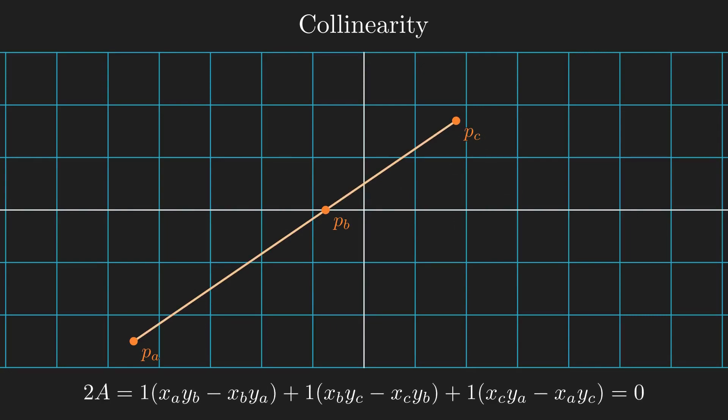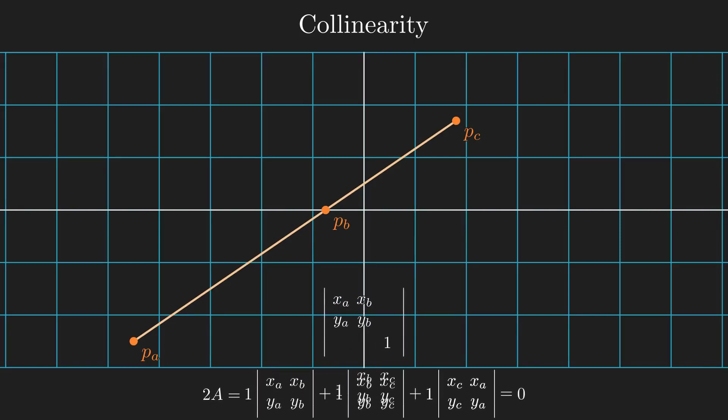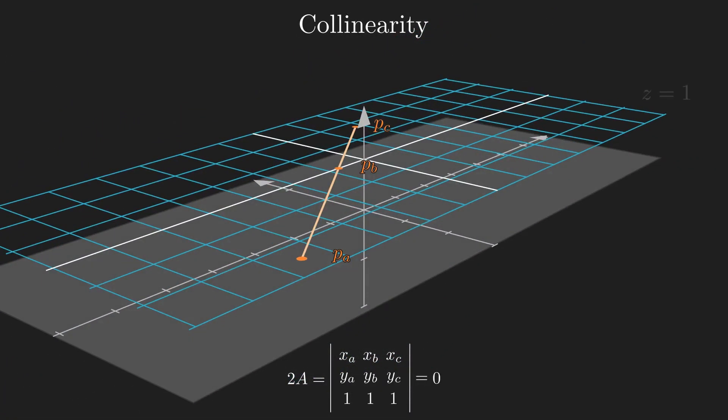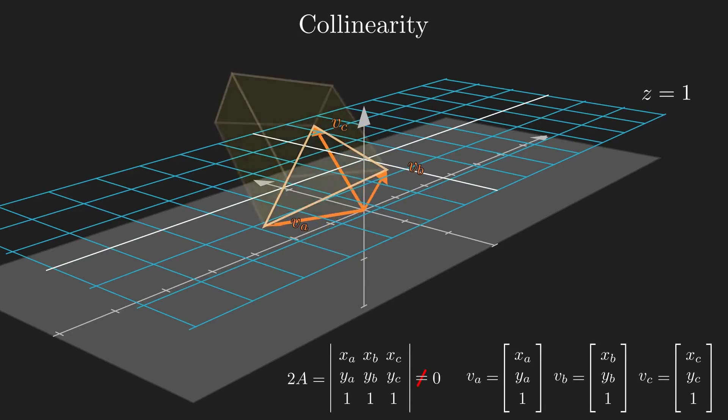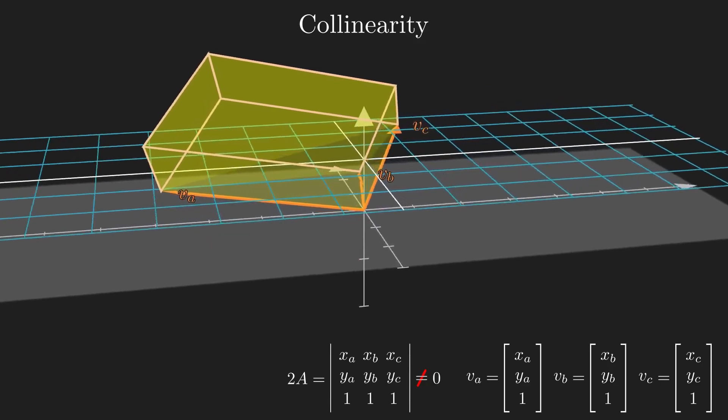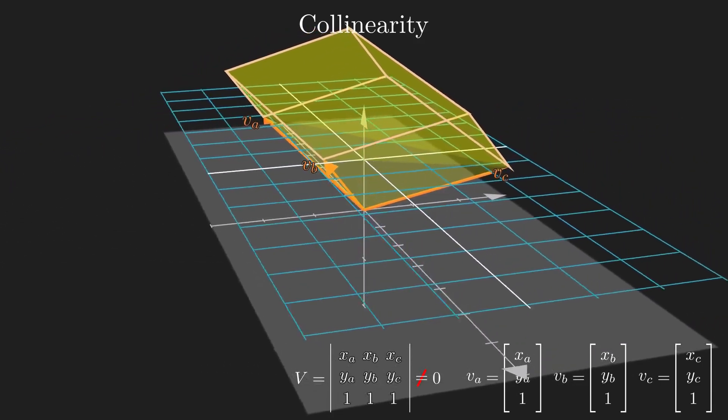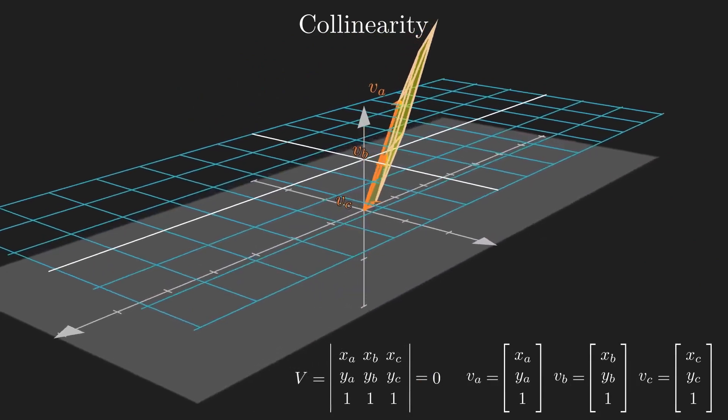Then, this could be arranged further to get this, a 3x3 determinant. This form of the area function reveals the truth behind where these points naturally live in: the z equals one plane. I'll now think of these points as 3D vectors on this plane, where each vector is a column of this determinant. Therefore, if I create a parallelepiped formed by these three vectors, its volume is the determinant. When the points become collinear, the volume goes to zero.